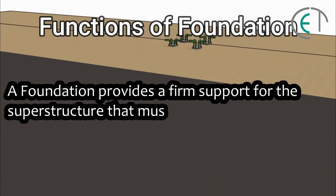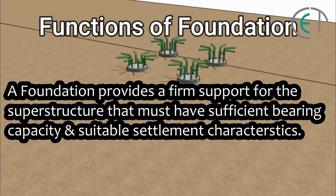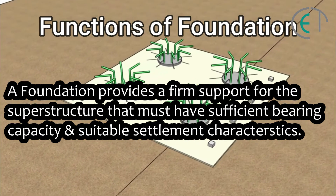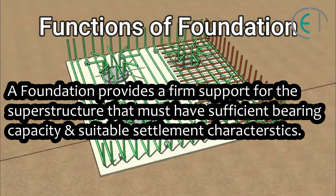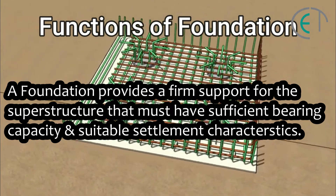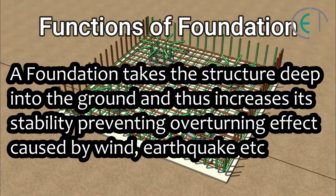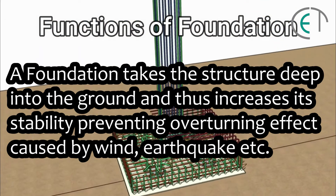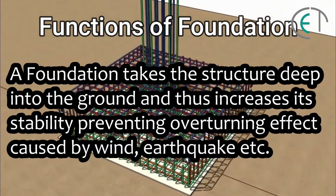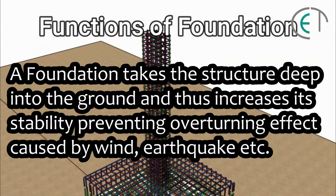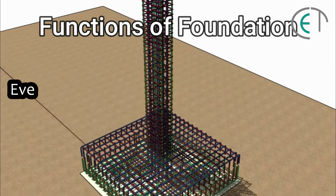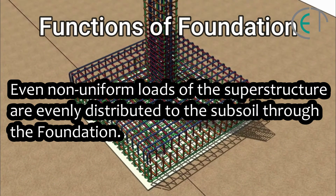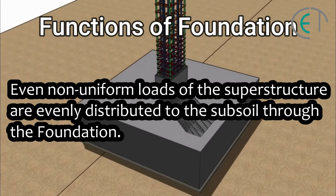A foundation provides firm support for the superstructure and must have sufficient bearing capacity and suitable settlement characteristics. A foundation also takes the structure deep into the ground, increasing its stability and preventing the overturning effect caused by wind, earthquake, and similar forces.